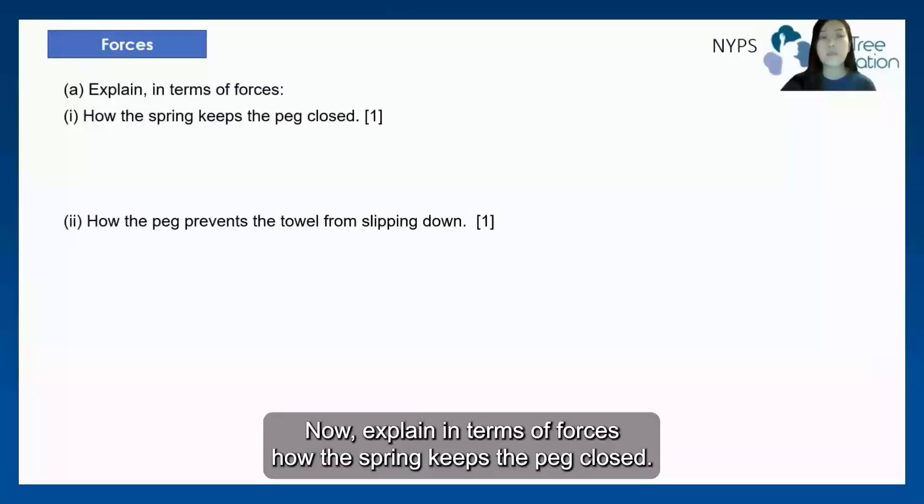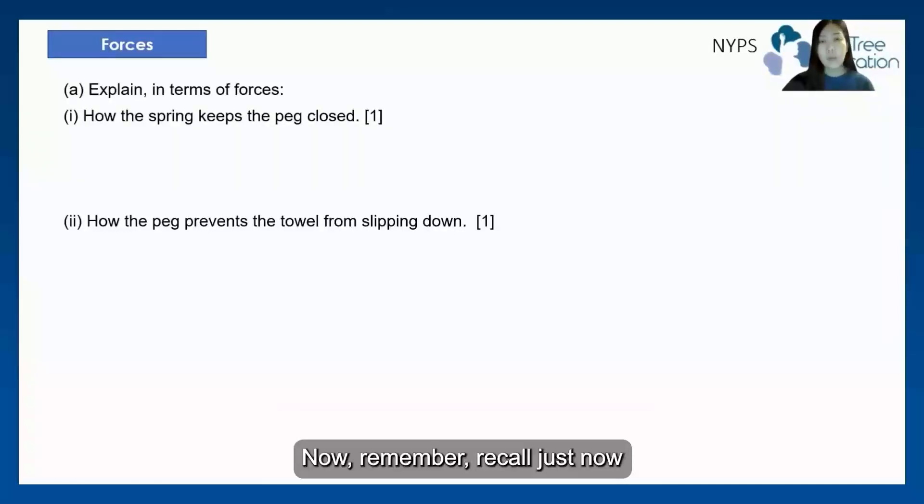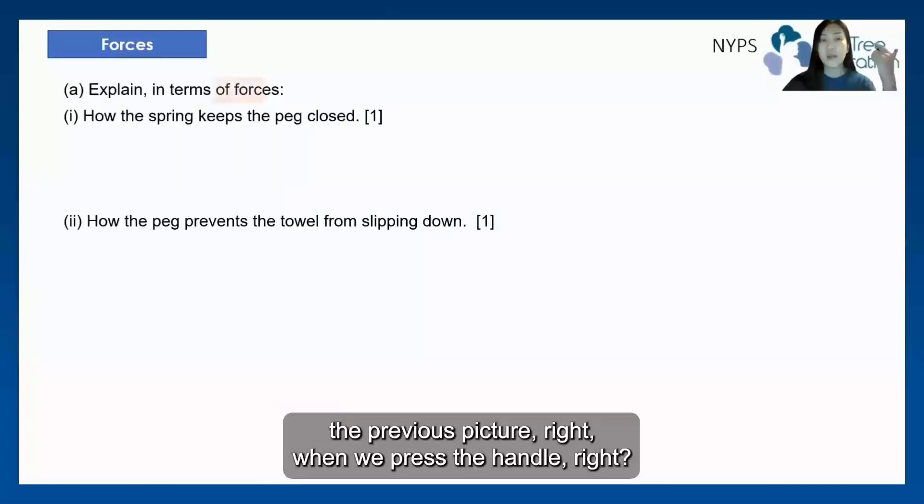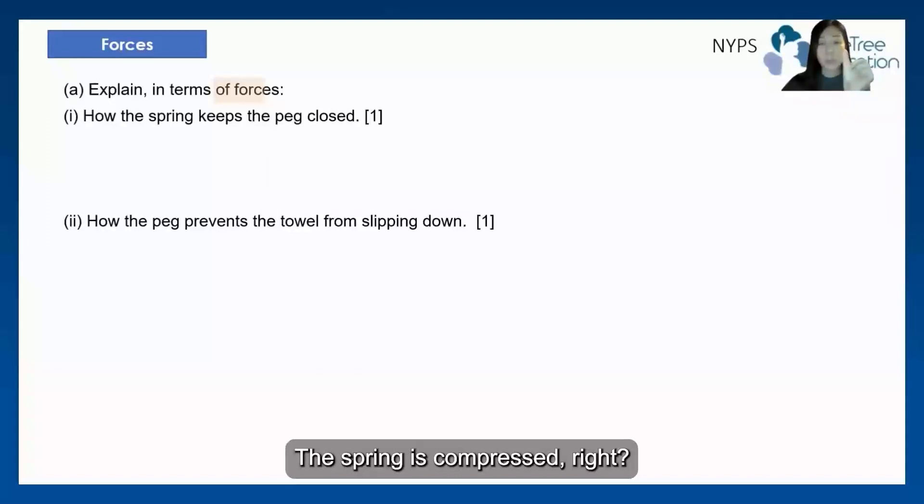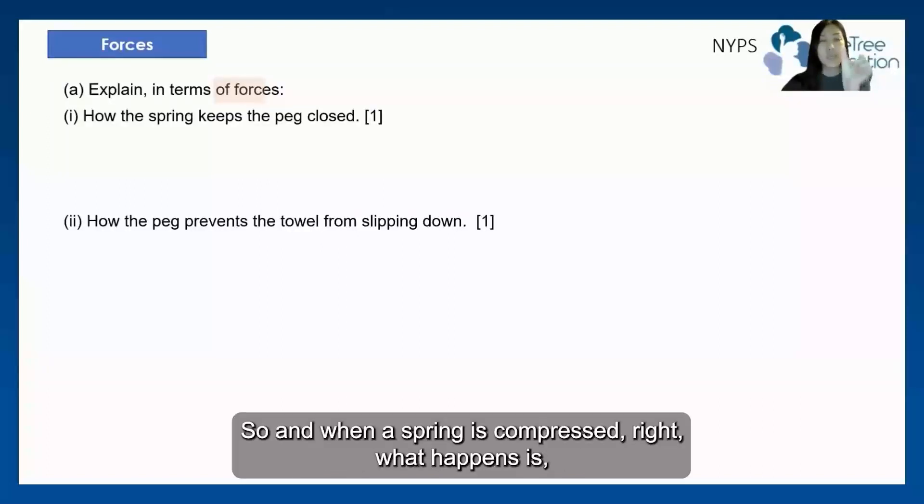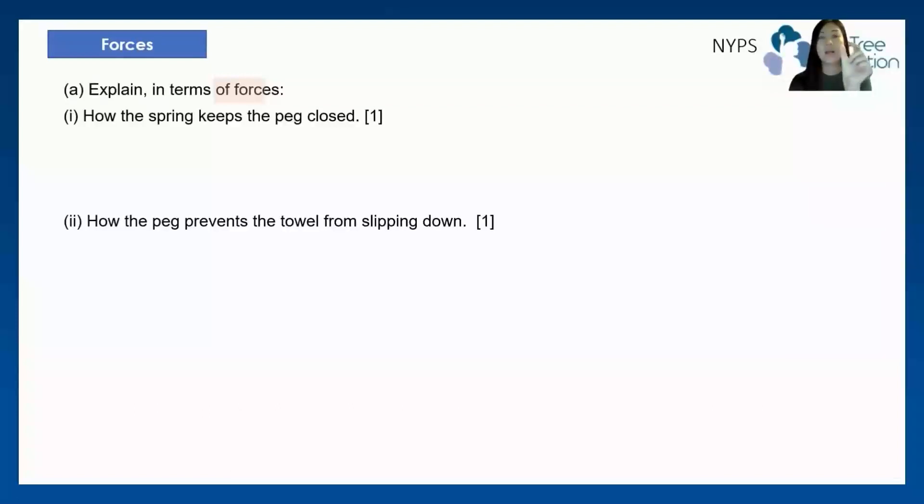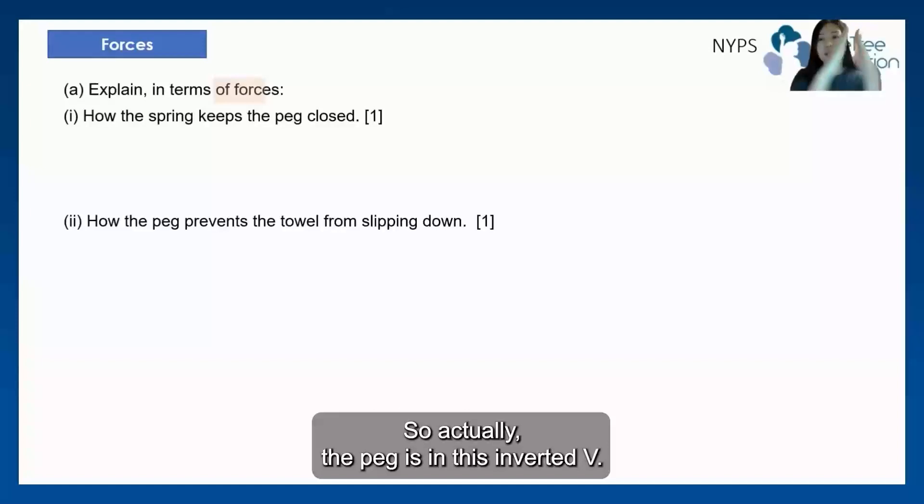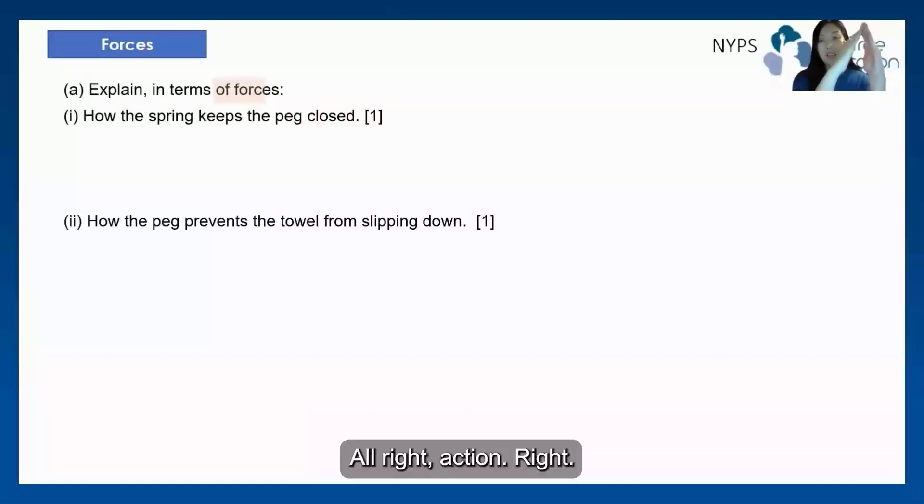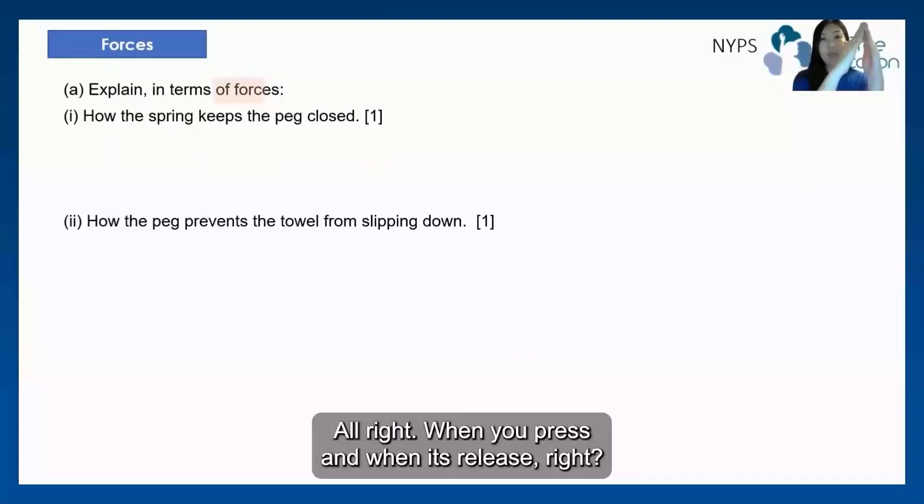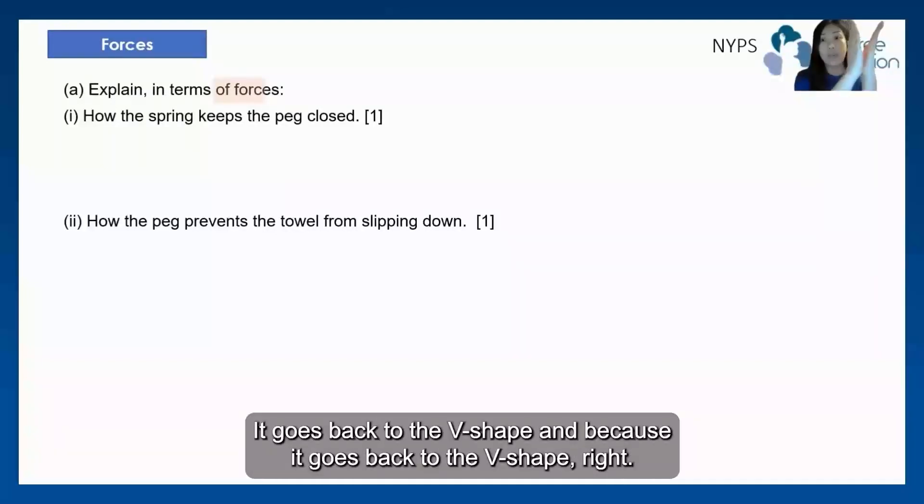Now, explain in terms of forces, how the spring keeps the peg closed. Now, remember, recall just now the previous picture, when we press the handle, the spring is compressed. So, and when the spring is compressed, what happens is it will close the peg below. Okay, so actually the peg is in this inverted V action. So at first it was like this, when you press. And when it's released, it goes back to the V shape.